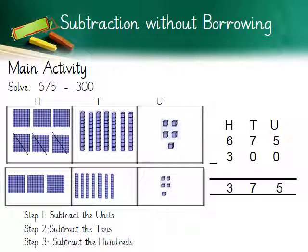Let's start with the units: 5 minus 0 — no units are being subtracted, so 5 remains at the units place. Next, tens: 7 minus 0 — 7 also remains at the tens place. Next, hundreds: 6 minus 3. If you look carefully, 3 hundreds have been cut down in the first table, and we are left with 3. The answer has been shown in the second place value table.